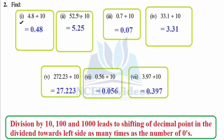For 52.5 divided by 10: write 525 first, and then since we only have 10 we shift only one digit towards the left hand side. Initially we were here and we shift by one, so the answer is 5.25. For 0.7 divided by 10: write 7 as it is, moving only one place towards the left because it is only 10. Initially we were here, now move it — so 0.07.